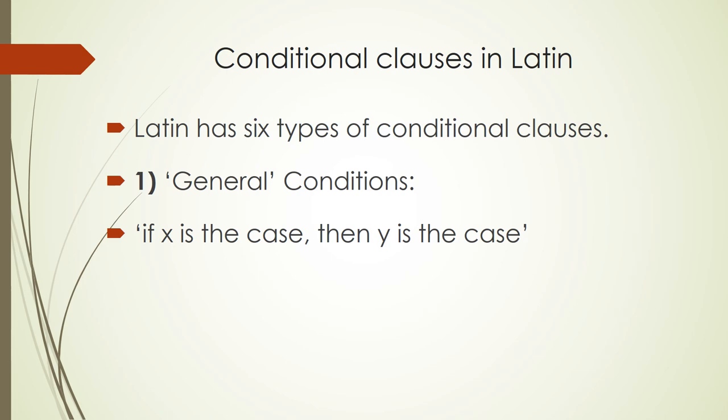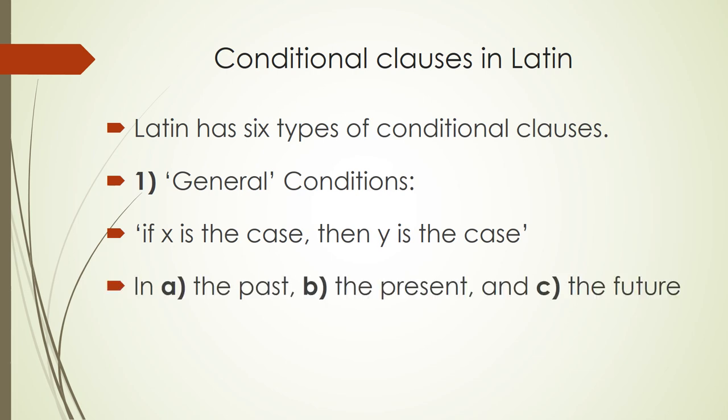These general conditions exist at each of the three time levels into which we split our reality: what's already happened — the past; what's happening right now — the present; and what is yet to happen — the future.